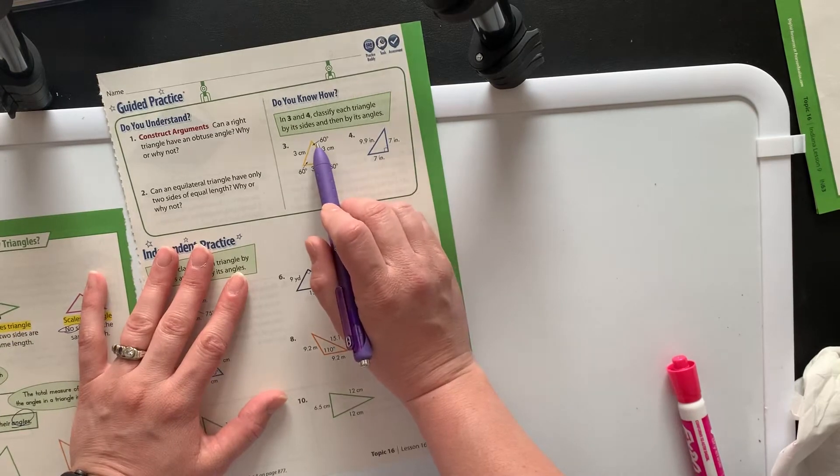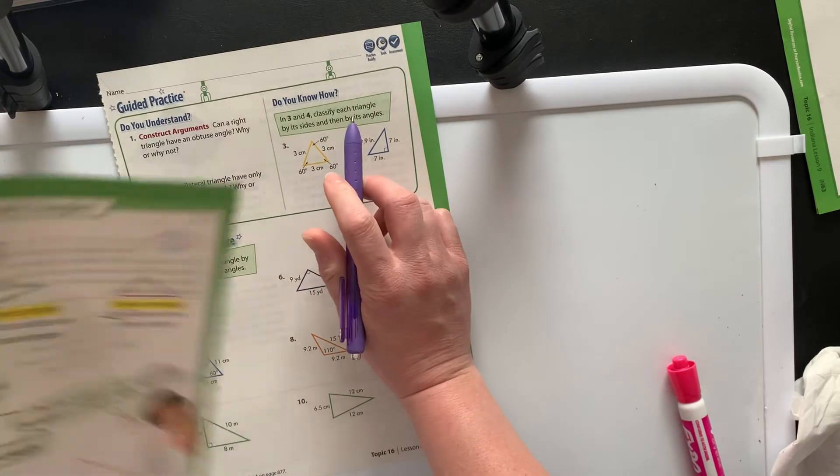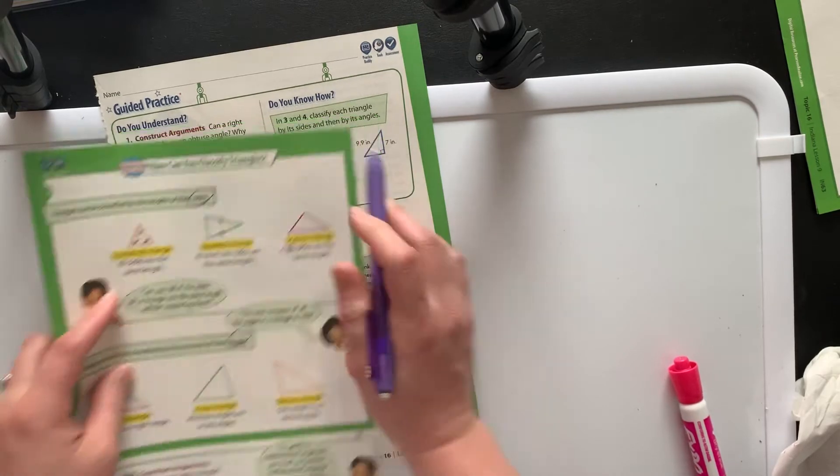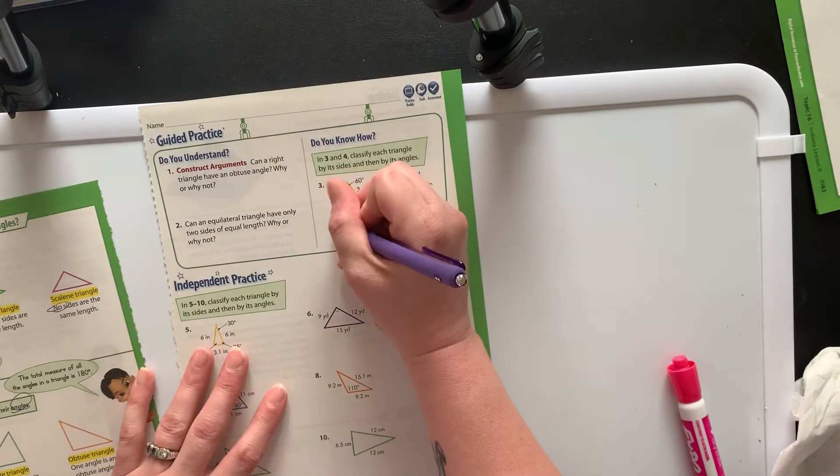So this one, we can see it has 60-60-60, which remember I told you that if it has 60-60-60, that has to be an equilateral triangle.